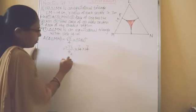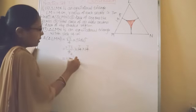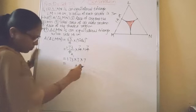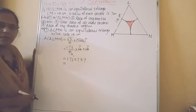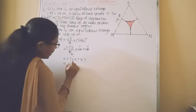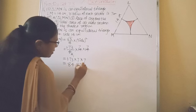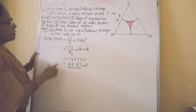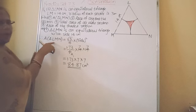So we have here 1.73 multiplied by 7 multiplied by 7 multiplied by 7, so if you multiply this you will get answer 84.87, 84.87 cm square. This is area of triangle LMN.